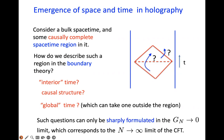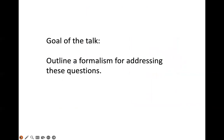Such questions can only be formulated sharply in the G-Newton goes to zero limit. Because at finite G-Newton, the spacetime fluctuates, and it's hard to make these geometric and causal statements very sharp. This corresponds to the N equals infinity limit of the CFT. The goal of the talk is a formalism for addressing such questions in holography.